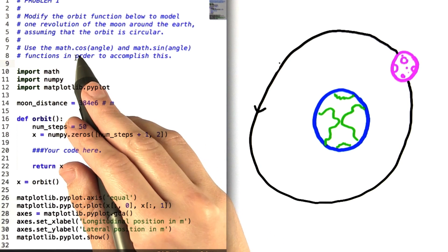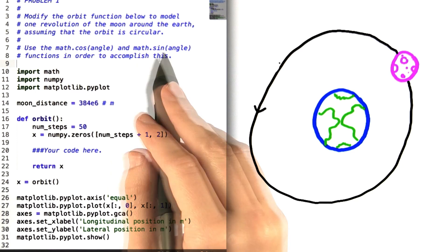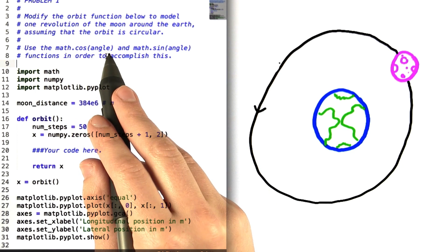One important thing to note is that the cosine and sine functions from Python's math library that we're using in this problem take arguments that are measured in radians, not in degrees.